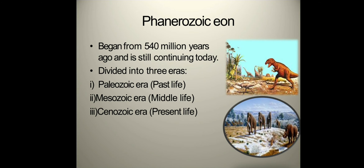The Phanerozoic eon began from 500 million years ago and is still continuing today. It is divided into three eras: the Paleozoic era, which is past life; the Mesozoic era, which is middle life; and the Cenozoic era, which is present life.